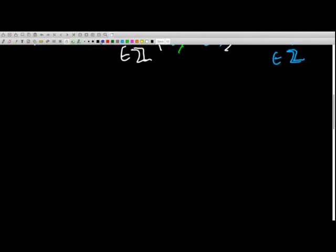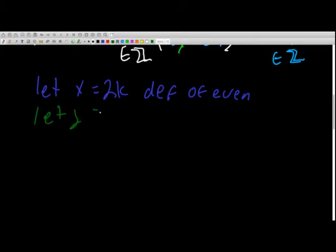So let's rewrite some stuff. Let's rewrite our definition for what an even integer is. So let's let x equal 2k by definition of even. Okay, and then let's let y equal 2l plus 1 by definition of odd.